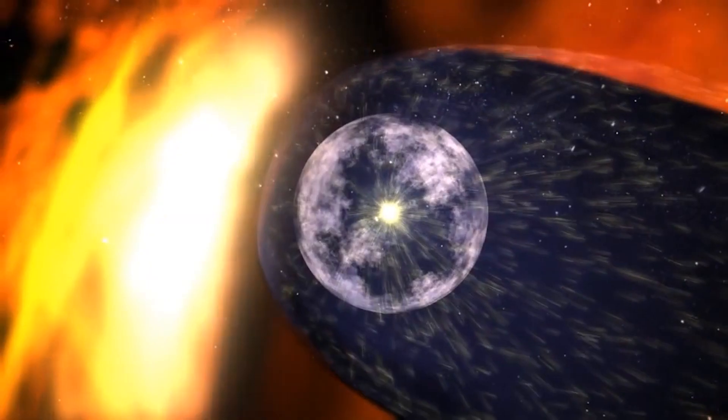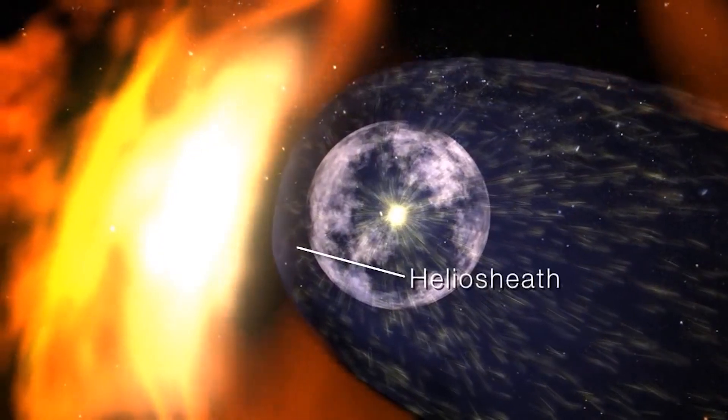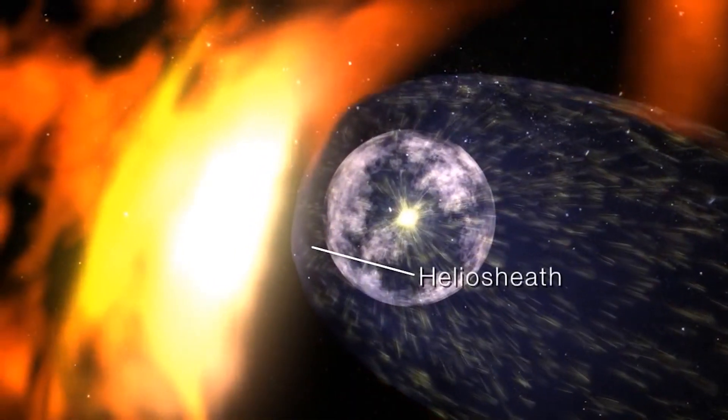After traveling through the termination shock, Voyager 1 entered the Helios Heath, a region of compressed plasma between the heliosphere and the interstellar medium.